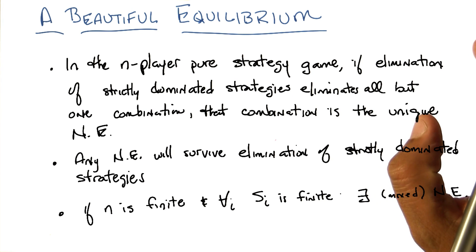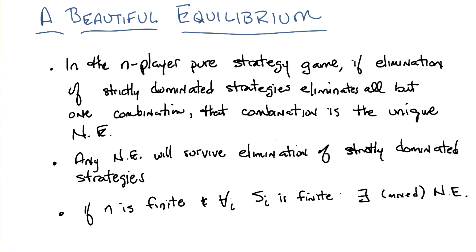In the n-player pure strategy game, if elimination of strictly dominated strategies eliminates all but one combination of strategies, then that combination is the unique Nash equilibrium.